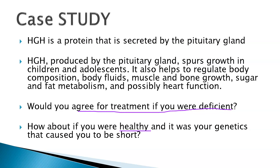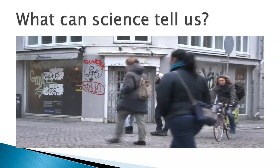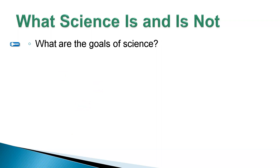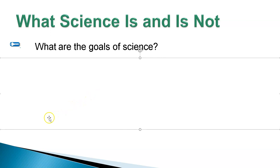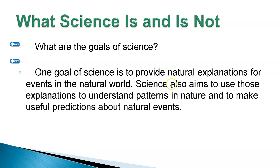There are social experiments — like if you're standing by a woman and her purse is stolen, would you chase the subject down? Here's what science can tell us: science cannot tell us about morality. Science can't tell us if something is right or wrong. Science only tells us about natural explanations — we're trying to understand the natural world based upon facts and evidence. We also want to understand patterns in nature to make useful predictions. Science can only tell you about a situation, not if it's right or wrong.